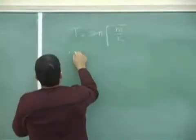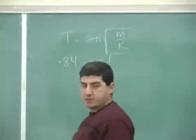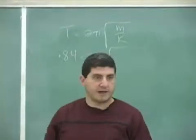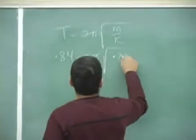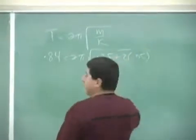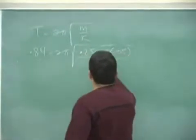So the period is 0.84 seconds. The m, again, it's 0.25 hanging there, plus twice the effective mass of each, right? Divided by the k total.